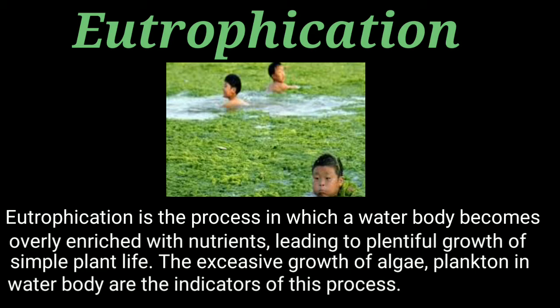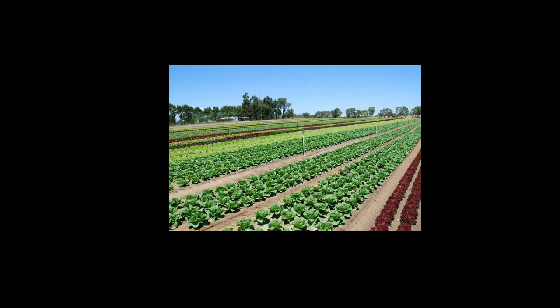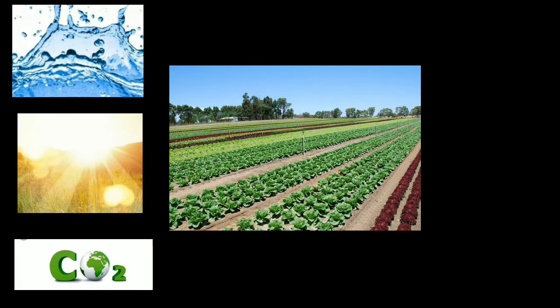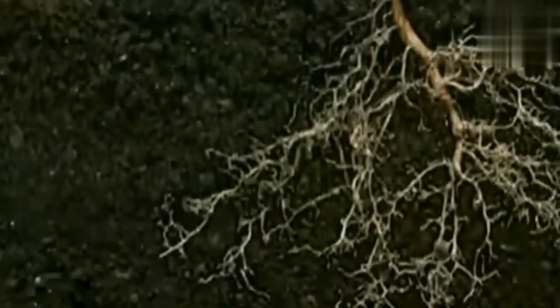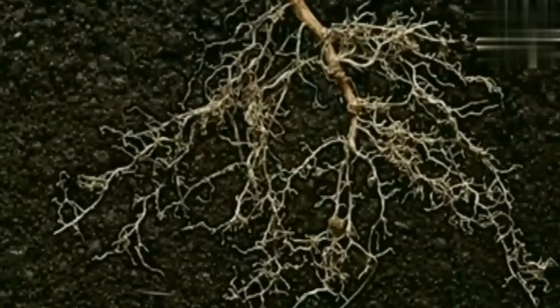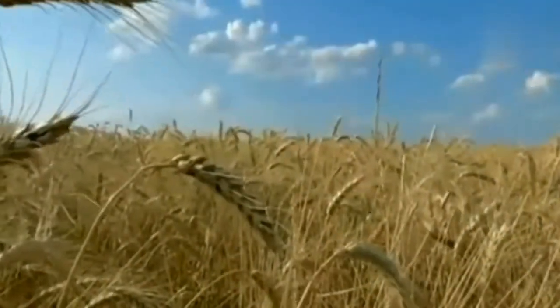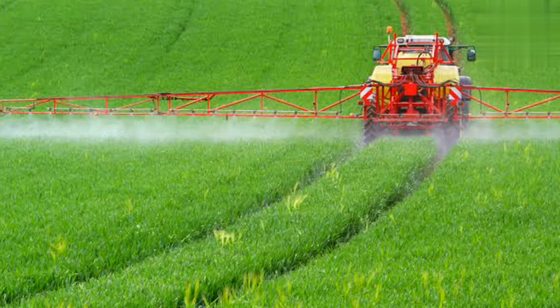Now we see why and how Eutrophication occurs. Plants require several things to grow. Most of us know a few things like water, sunlight and CO2. But plants also need a variety of nutrients as well, things like nitrogen and phosphorus. Usually plants will get all the required nutrients from the soil through their roots. But if the soil is bad or there has been leaching or soil erosion, farmers who want their plants healthy and green will put down something called fertilizers. These fertilizers consist of nutrients which plants need, such as nitrogen and phosphorus.